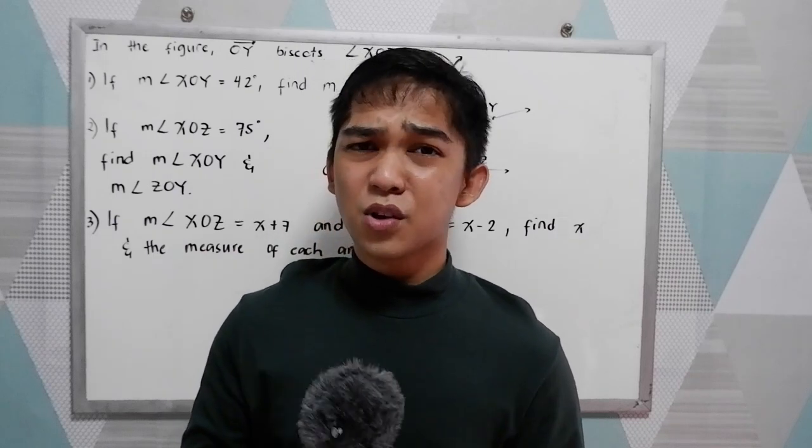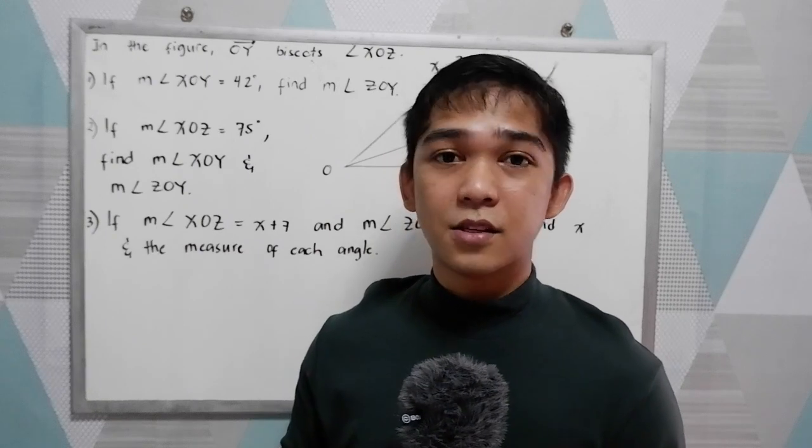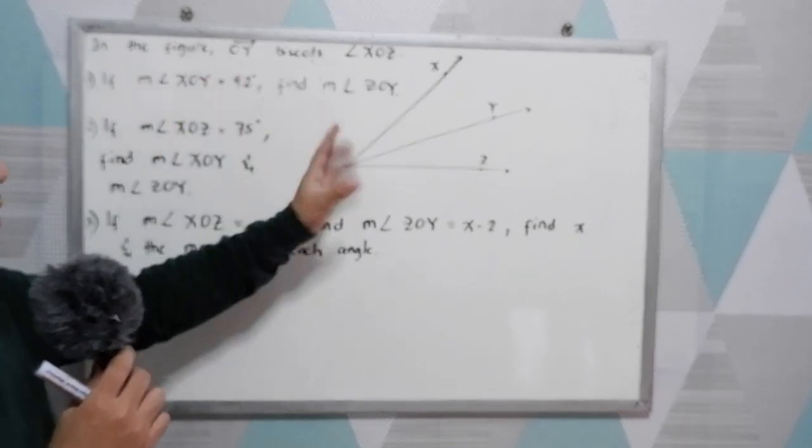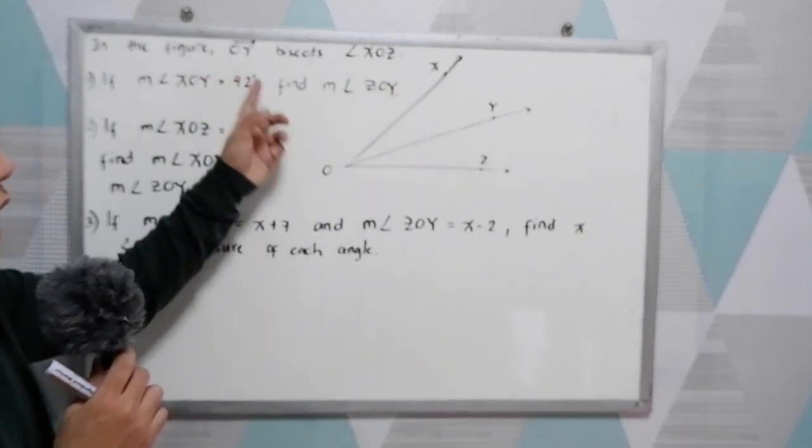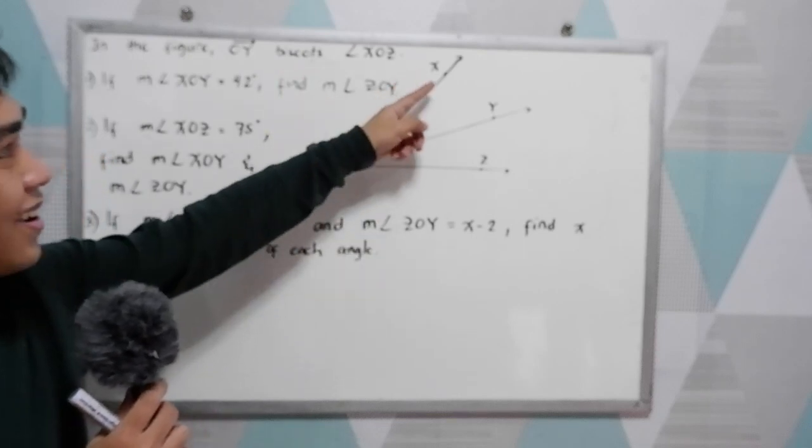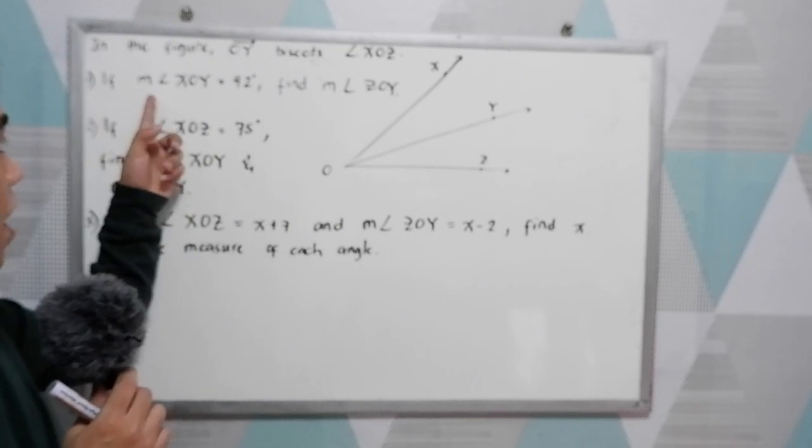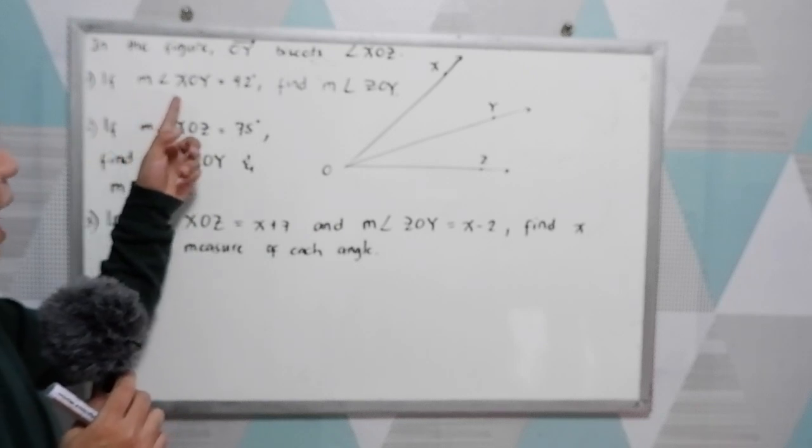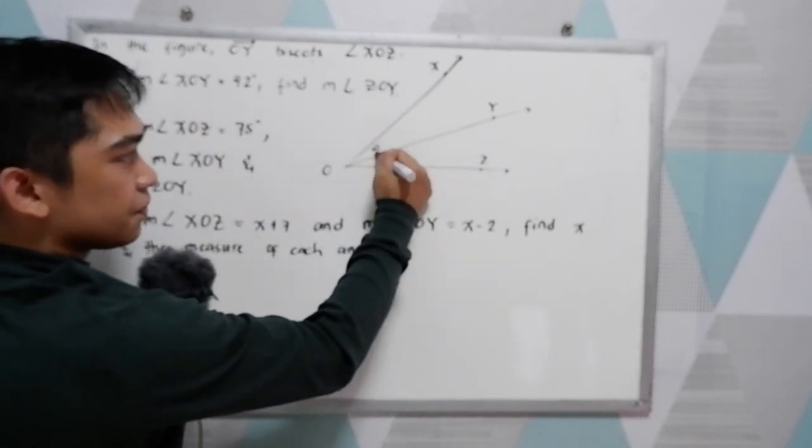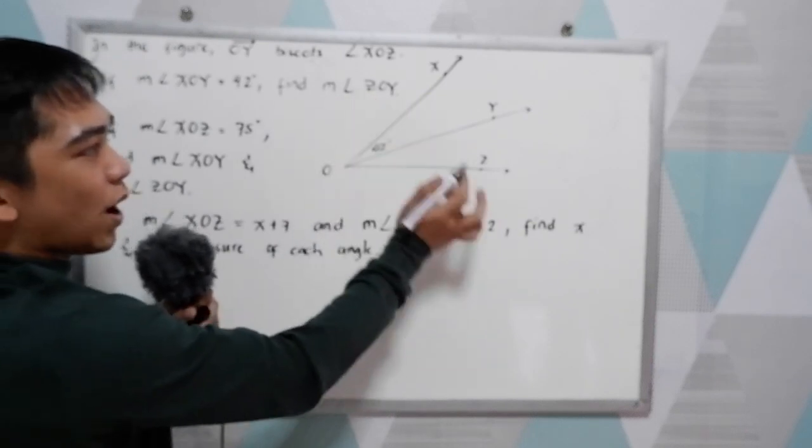Now let's try to solve some problems regarding angles and their measure. In the figure, ray OY bisects angle XOZ. If measure angle XOY is 42 degrees, find the measure of angle ZOY.